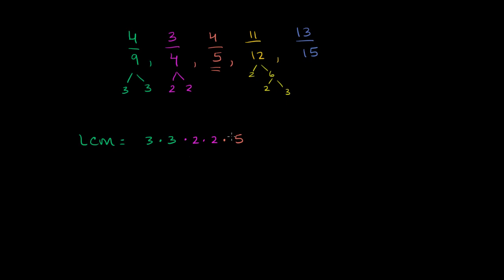In our least common multiple, we need two 2's — but we already have two 2's from our 4. And we already have one 3 from our 9. So something divisible by both 9 and 4 is going to be divisible by 12, because we have the two 2's and the one 3. Finally, we need to be divisible by 15's prime factors. 15 is 3 times 5, and our LCM already has a 3 and a 5, so we're good for 15 and 12.